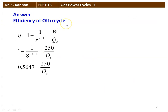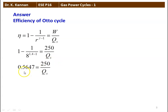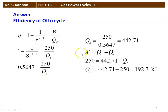The efficiency of the Otto cycle is defined as eta equal to 1 minus 1 by R to the power gamma minus 1, which is also equal to net work done divided by the heat supply. Taking the second and third term: 1 minus 1 by 8 to the power 1.4 minus 1 equals 250 divided by QS. This equals 0.5647 equal to 250 divided by QS. Rearranging and calculating QS, heat supplied equals 250 divided by 0.5647, equal to 442.71.